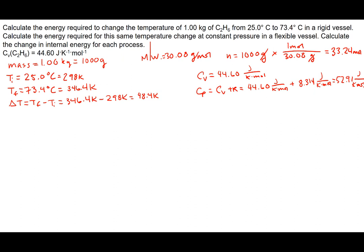Now we can start tackling these problems. The first one is the constant volume problem because we're in a rigid container. Work in a thermodynamic sense is going to be negative P delta V. In a constant volume situation, delta V equals zero, so work is automatically going to be equal to zero in a constant volume, rigid vessel, bomb calorimetry problem. So if you see constant volume and you're expected to calculate work, you can straight away give work equal to zero. Heat Q equals the number of moles times the heat capacity at constant volume, CV, times delta T.